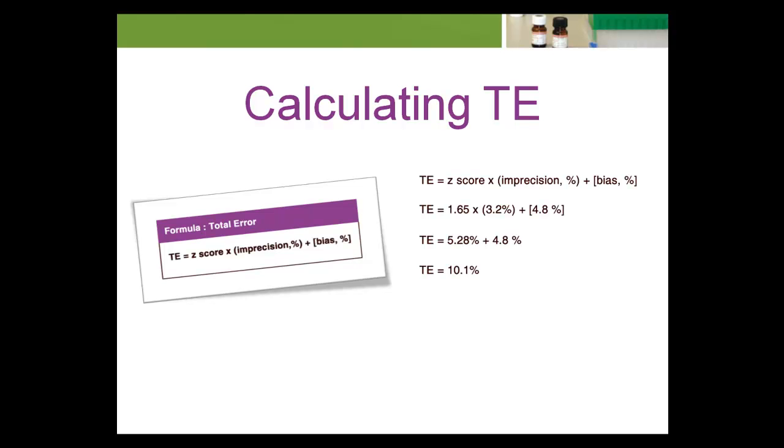We'll multiply the z-score, 1.65, by the CV percent, 3.2 percent, and then add the bias, 4.8 percent, resulting in a TE of 10.1 percent.